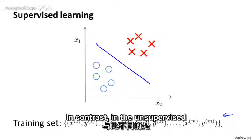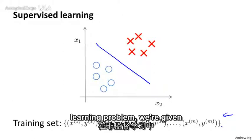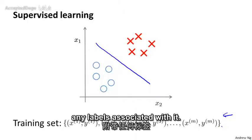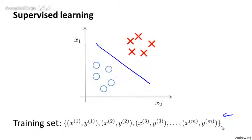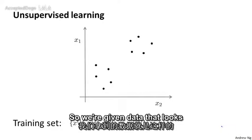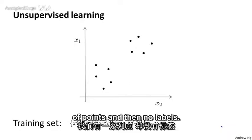In contrast, in the unsupervised learning problem, we're given data that does not have any labels associated with it. So we're given data that looks like this. Here's a set of points and then no labels.